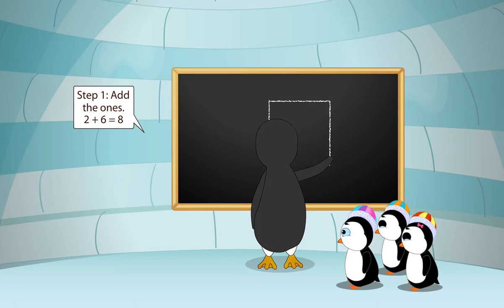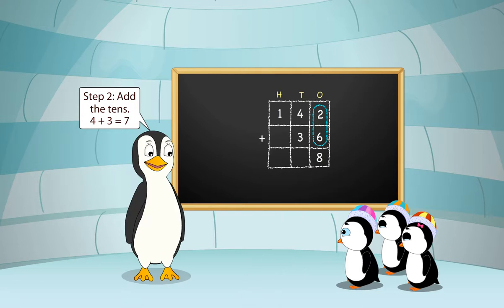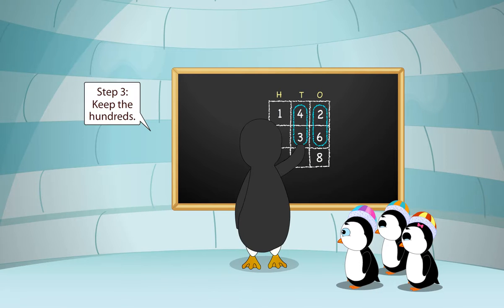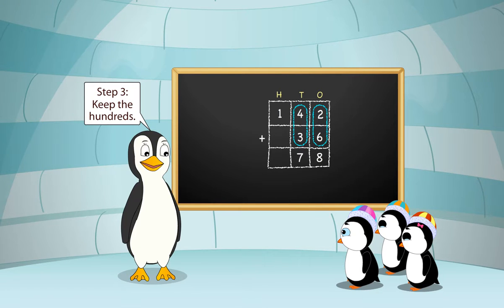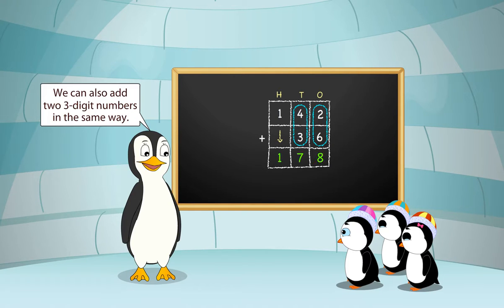Step 1. Add the ones. 2 plus 6 is equal to 8. Step 2. Add the tens. 4 plus 3 is equal to 7. Step 3. Keep the hundreds. The answer is 178.